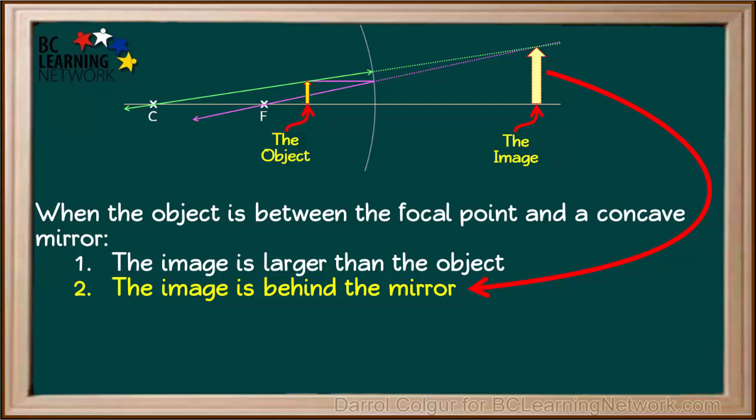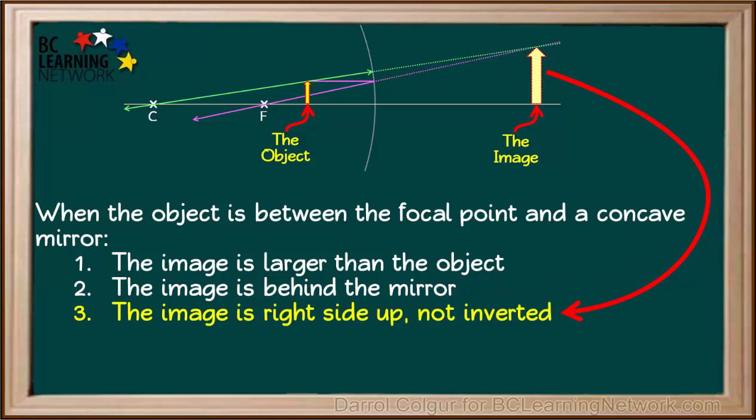Secondly, the image appears to be behind the mirror. But remember, no rays actually go through the mirror. We can see that the image in this case is right side up, rather than inverted. This is always true when the object is between the focal point and the surface of this type of mirror.